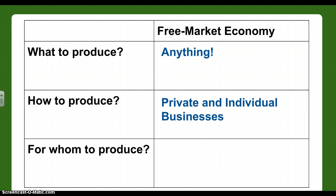To produce in a free market economy, it's all about private and individual businesses — the government's not involved. Anybody who ventures out to try and make money is going to produce it and hire people to get that done. For whom to produce — anyone who wants to buy, like the unicorn pills. No government guidelines; the private individual decides and knows best.